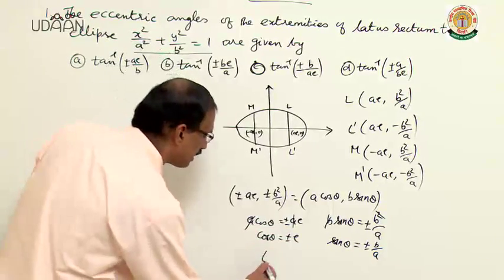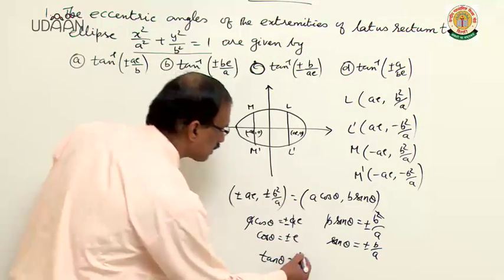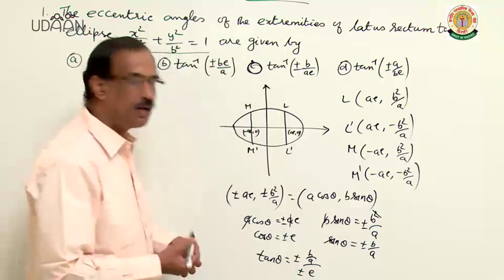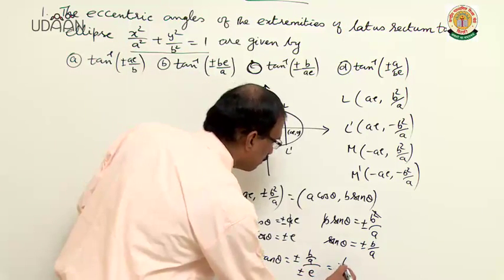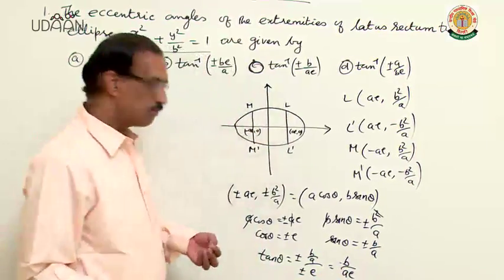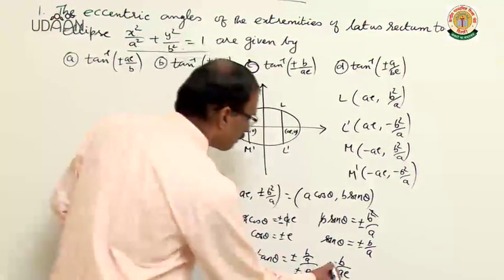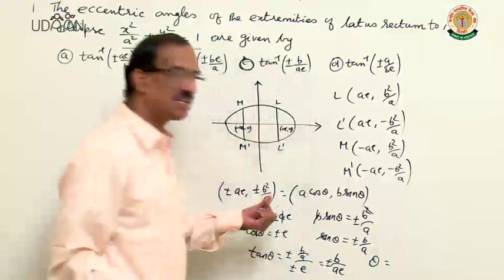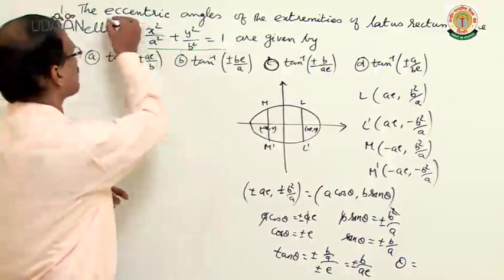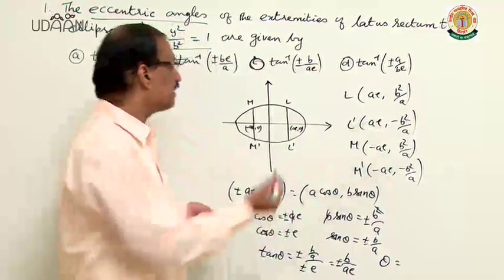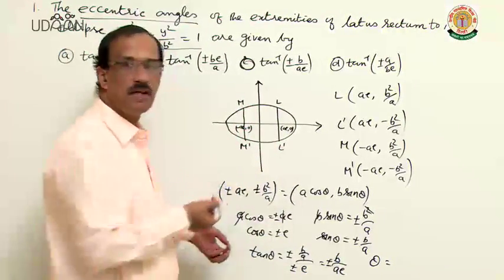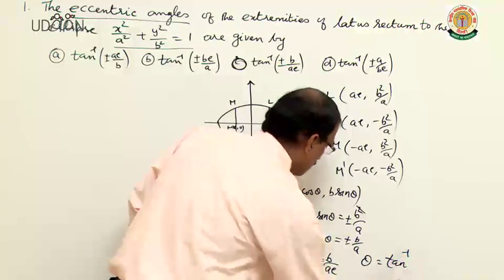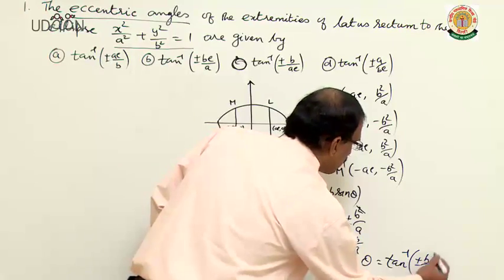From these, tan θ = sinθ/cosθ = (±b/a)/(±e) = ±b/ae. Therefore, the eccentric angle θ = tan⁻¹(±b/ae). This is the eccentric angle at each of the extremities L, L', M, and M' of the latus rectum.